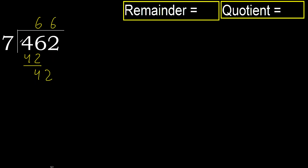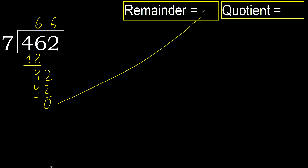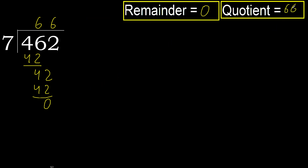7 multiplied by 6 — 42 is not greater. Subtract 0. Next digit: that is not a number, therefore finished. 462 divided by 7 is 66.